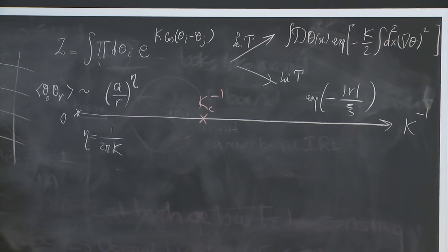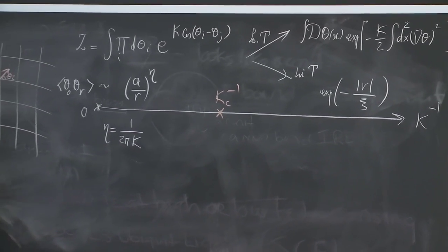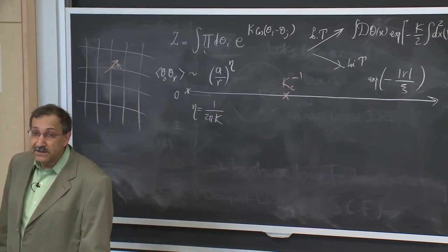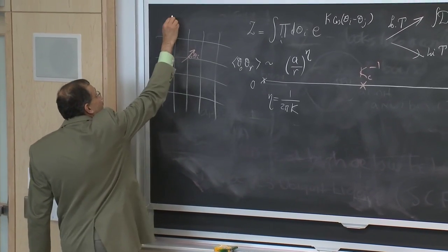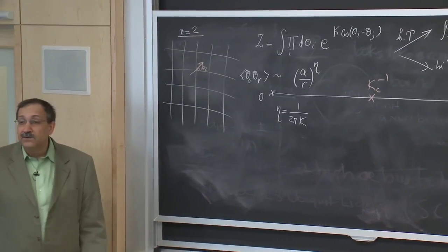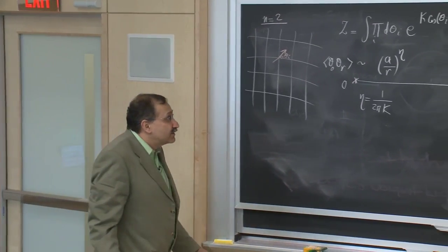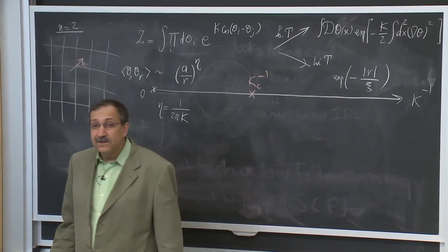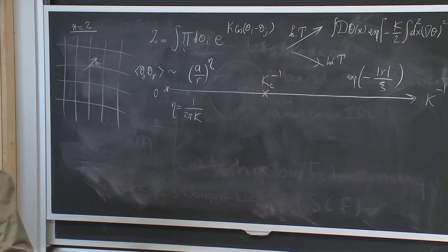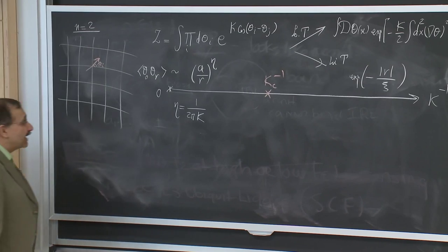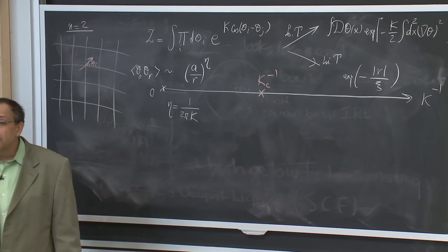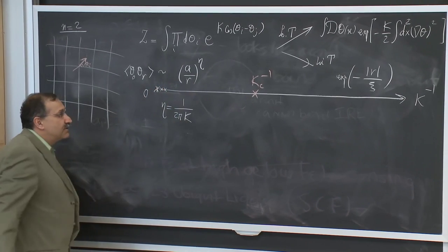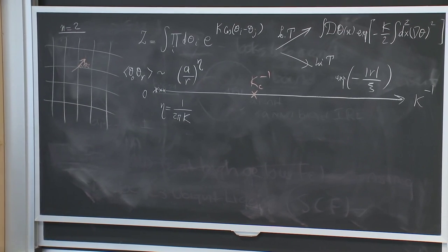There was no sign of such a k_c when we tried to do a low temperature expansion like the non-linear sigma model in the XY model, which corresponds to n equals 2. The reason is that the only higher order terms I can write down close to low temperature — gradient of theta to the 4th, 6th, et cetera — are explicitly irrelevant. Unlike n equals 3, they cannot cause any change. So as far as that theory was concerned, all of these corresponded to being fixed points.